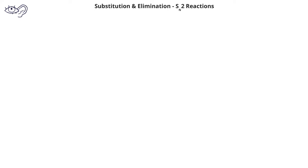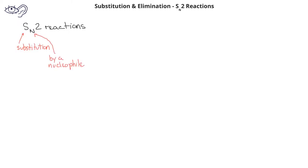Now that we've been introduced to substitution and elimination reactions, let's examine each of these different kinds of reactions in more detail. We'll begin with a type of substitution reaction known as an SN2 reaction. The S stands for substitution, the N for nucleophile, and the 2 indicates that the slow rate-determining step in this mechanism is bimolecular — in other words, there are two reactants involved in the rate-determining step.